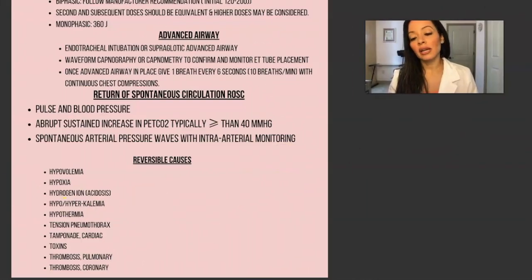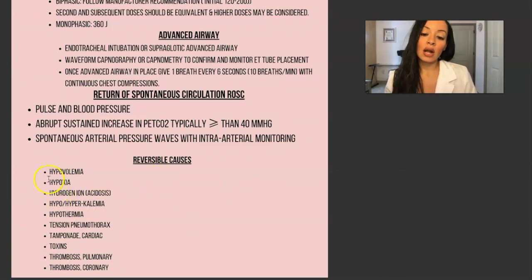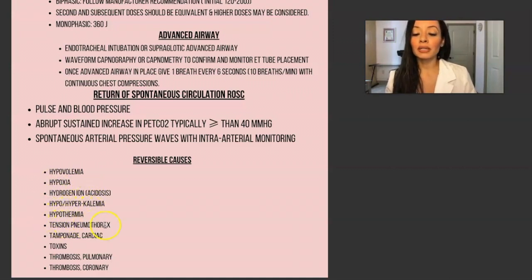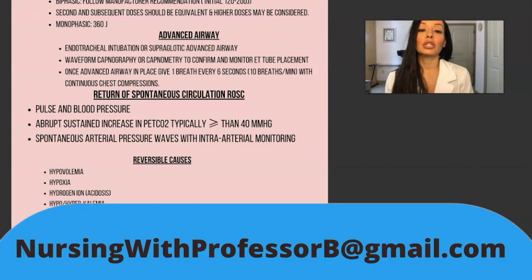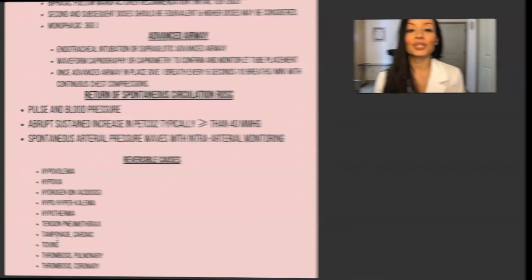These are the reversible causes — your H's and T's: hypovolemia, hypoxia, hydrogen ion (acidosis), hypo- or hyperkalemia, hypothermia, tension pneumothorax, cardiac tamponade, toxins, pulmonary thrombosis, or coronary thrombosis. Hope that helps! If you want a free copy of this algorithm, make sure you subscribe and email nursingwithprofessorb@gmail.com. Thank you so much.